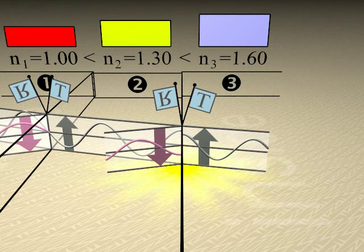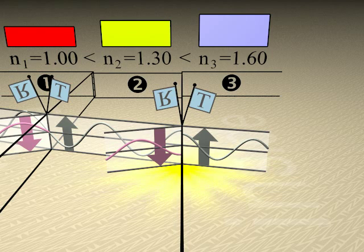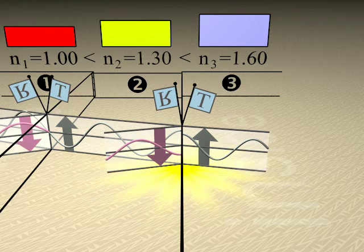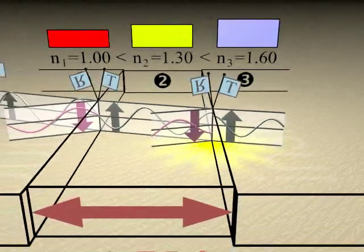At the second boundary, once again, part of the beam is reflected and part is transmitted. The reflected wave is again emitted upside down since the reflected inside medium has a higher index.